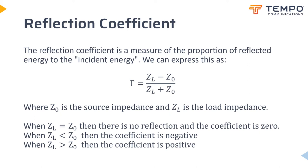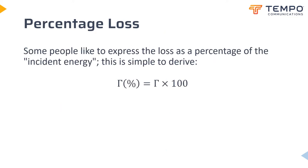Whenever there is a change of impedance, some energy will be reflected — but how much? That depends upon the relative change of impedance. The impedance of a cable can change for many reasons: mechanical distortion, change of the dielectric, or series resistance perhaps due to corrosion. What we show here is an equation for gamma, the reflection coefficient, which is zero for perfect matching and increases towards one as ZL — the load impedance — tends towards zero (short) or infinity (open circuit). Sometimes people prefer to express the reflection coefficient as a percentage: 0.05 represented as 5% signal return loss.